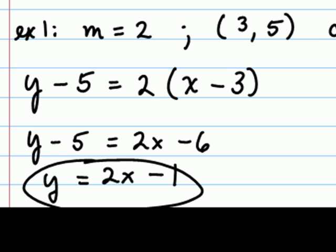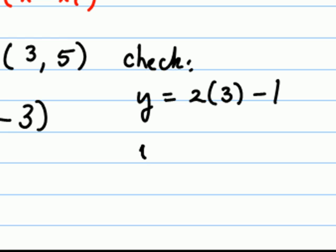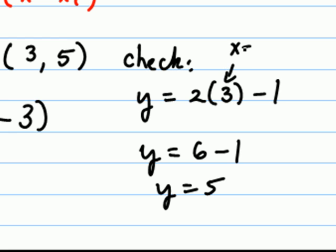We can do a check by noting that the slope of this line is 2, which by definition matches our question. We just need to verify that the ordered pair (3, 5) really is on the line. If x is 3, we should get 5 when we evaluate the equation. As a check: y equals twice 3 minus 1, y equals 6 minus 1, y equals 5. This verifies that if x is 3, we really do get a value of 5 for y, indicating that the point (3, 5) is on the line.